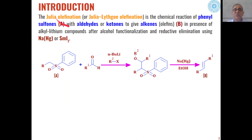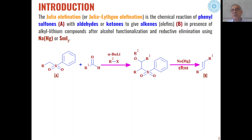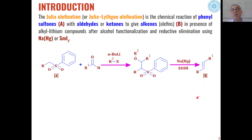Julia olefination is basically a chemical reaction where phenylsulfone derivatives react with aldehydes or ketones in the presence of strong bases like alkyl lithiums and alkyl halides to give alkoxy sulfone derivatives, which on reduction with sodium amalgam in the presence of ethanol are converted into alkenes. Depending upon the reaction conditions, both E and Z alkenes can be formed, but we can select the conditions in such a way that we can exclusively get either E alkenes or Z alkenes.